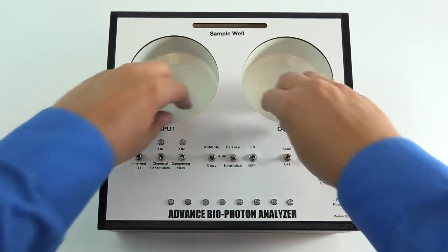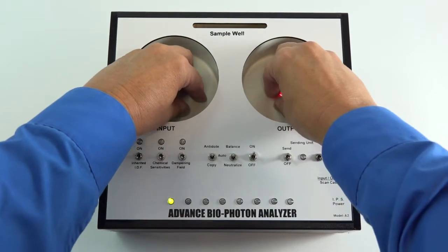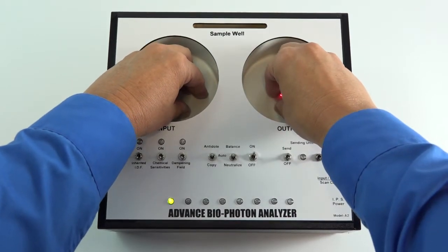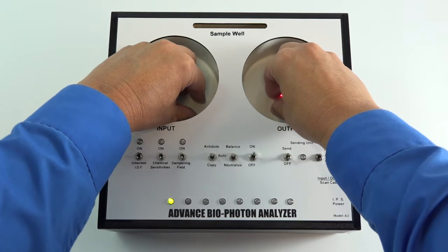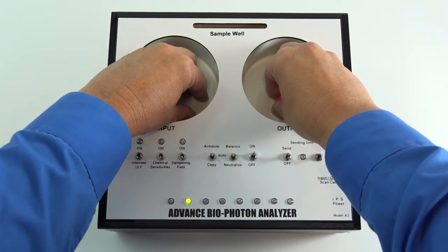With the fingertips still in the wells, turn on the ABPA for one more 40-second sequence.